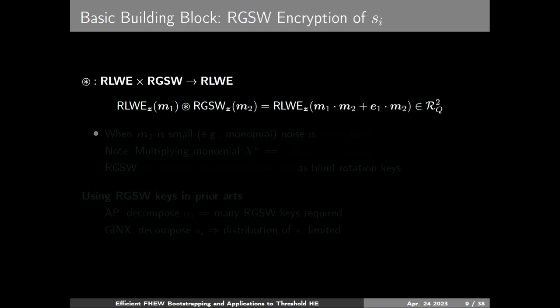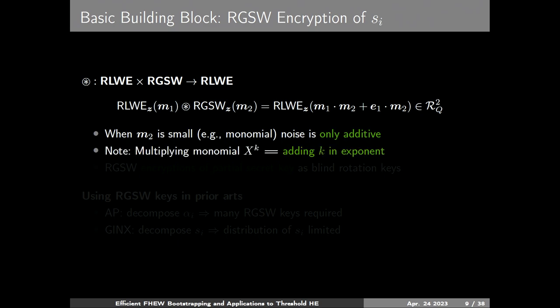A totally new approach to bootstrapping CKKS, BGB, and BFP has been proposed using blind rotation too. We use RGSW encryption as a building block of blind rotation. As you can see in the equation, when M2 is small, the error E1 is not multiplied. Multiplying a monomial x^k is equal to adding k in the exponent, so we use it to add partial information of the secret key to the exponent again and again.